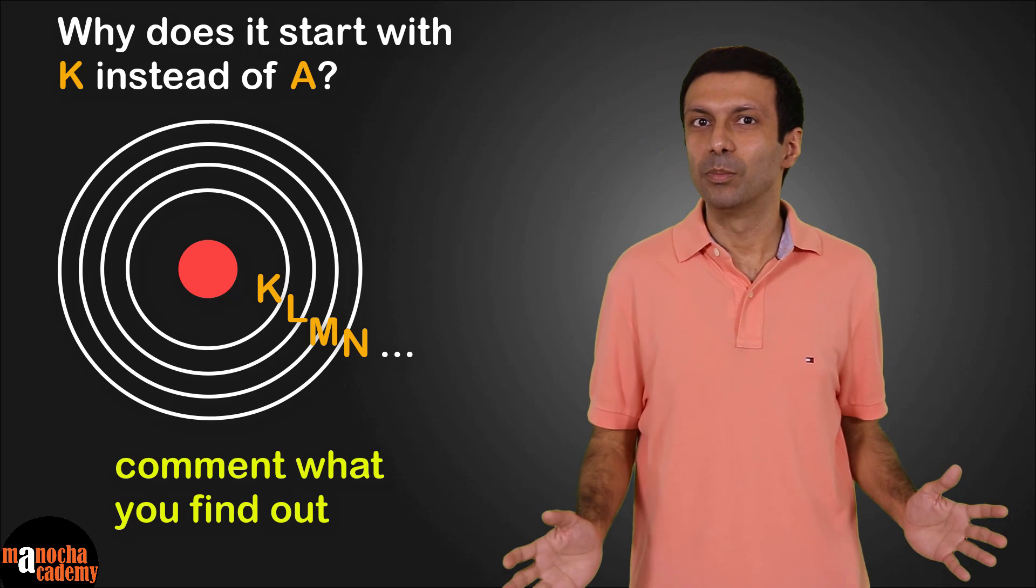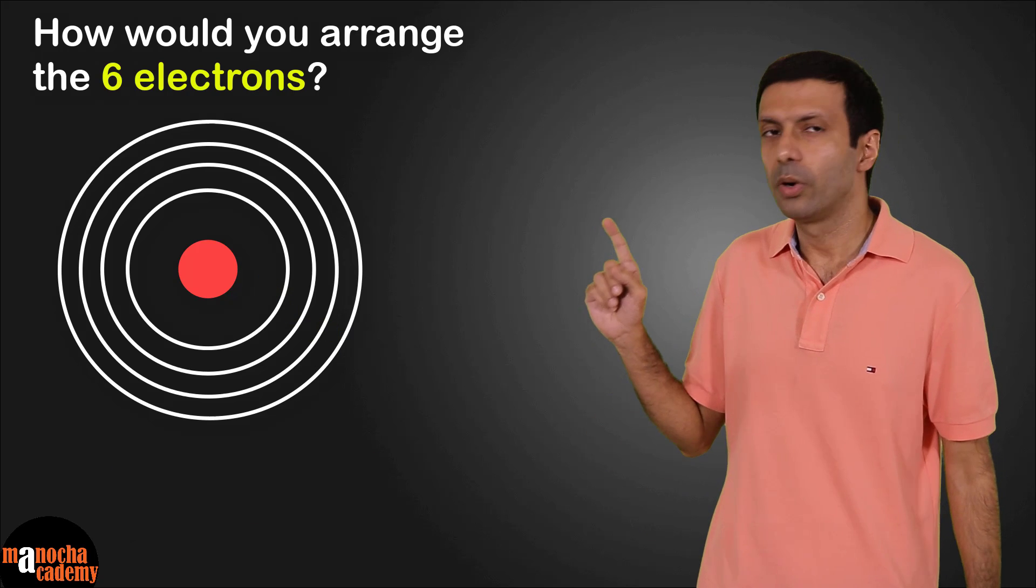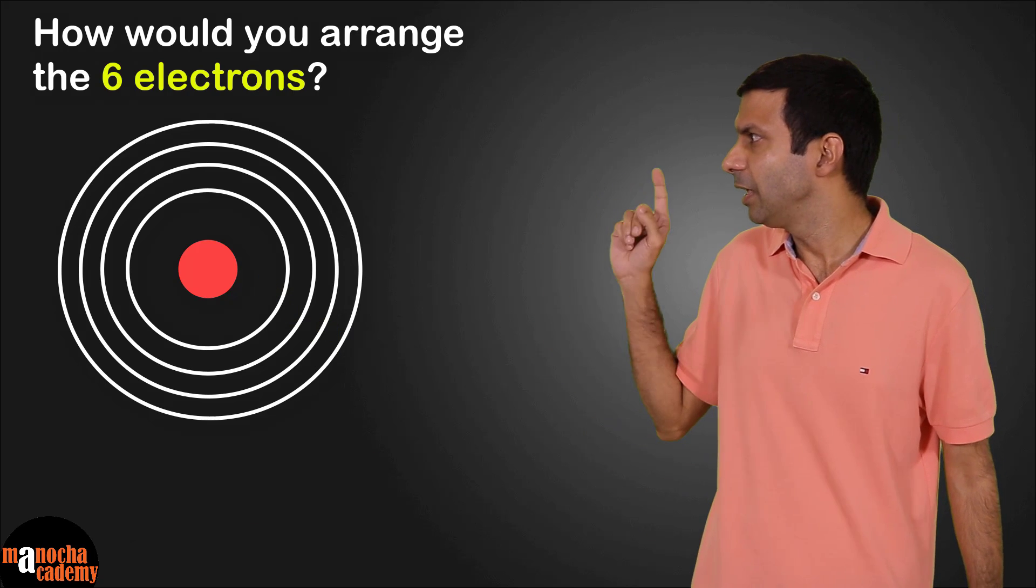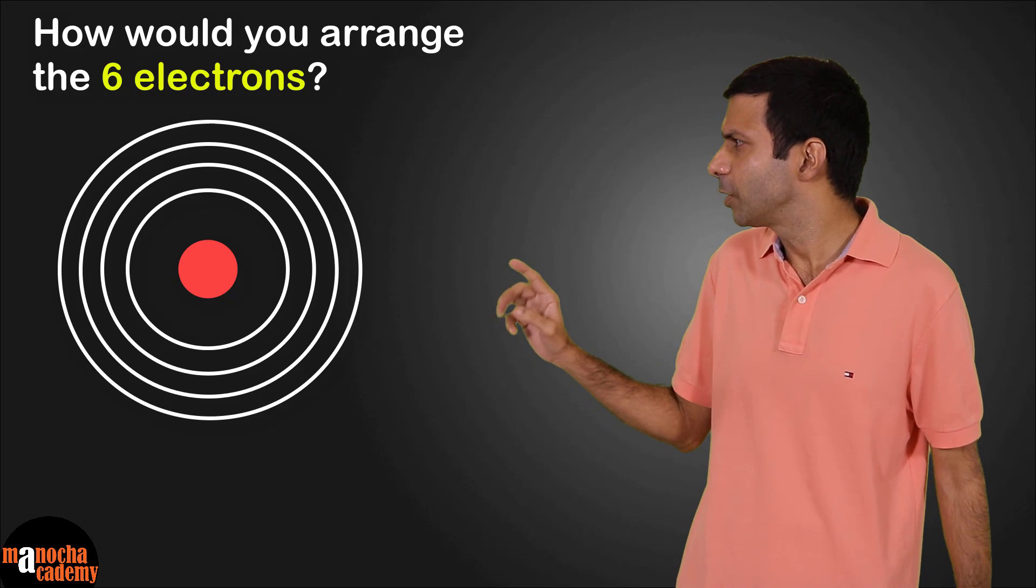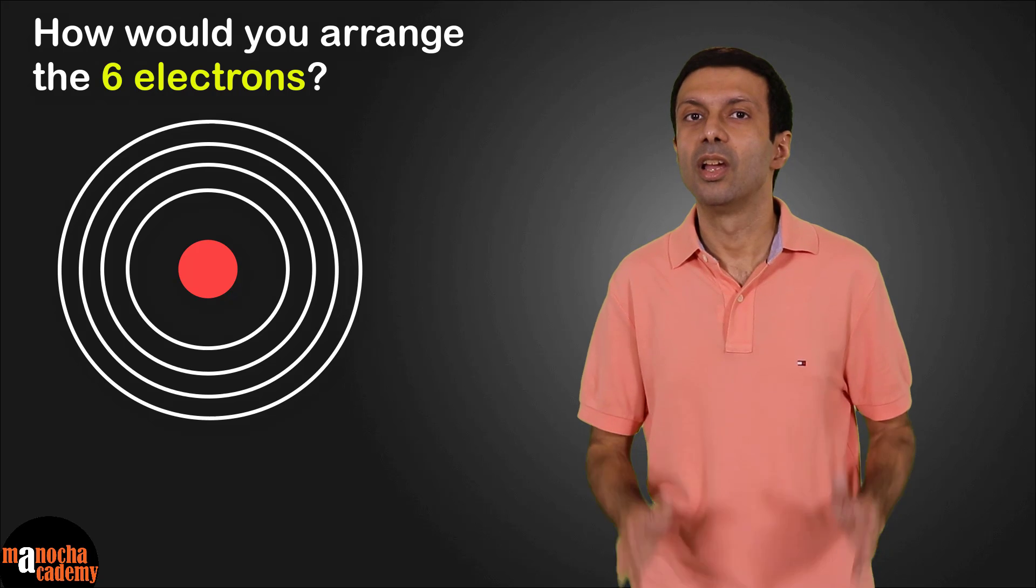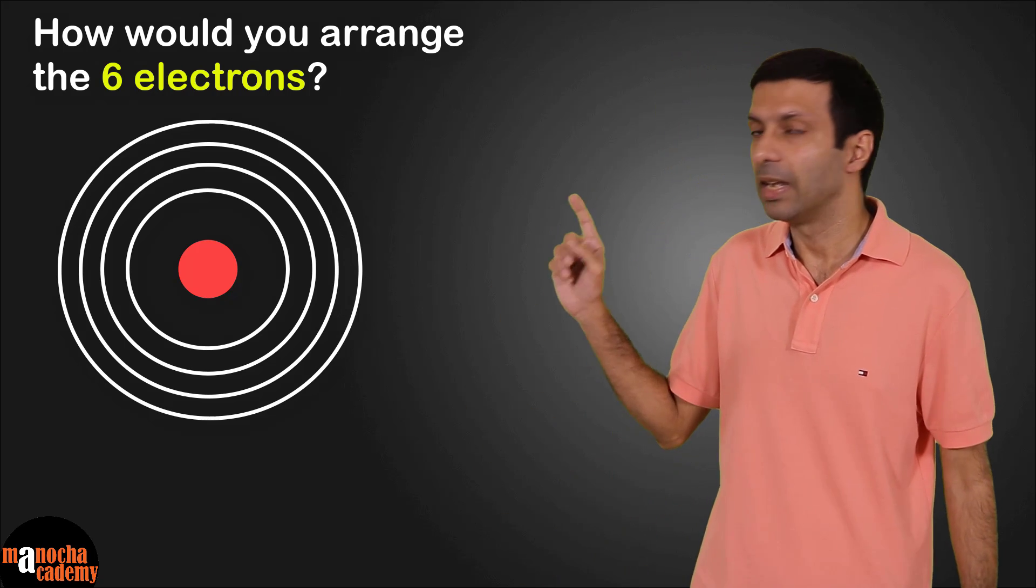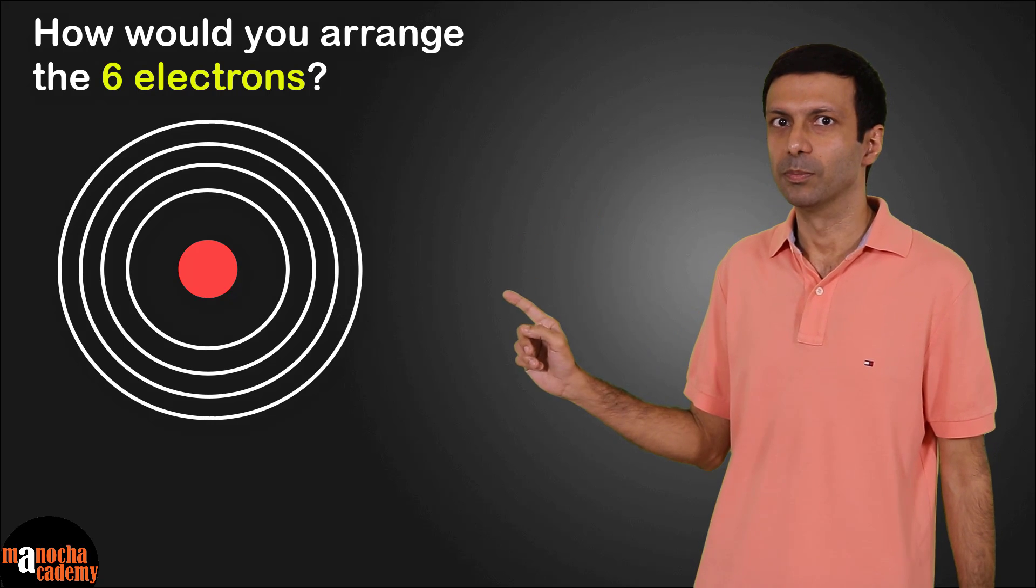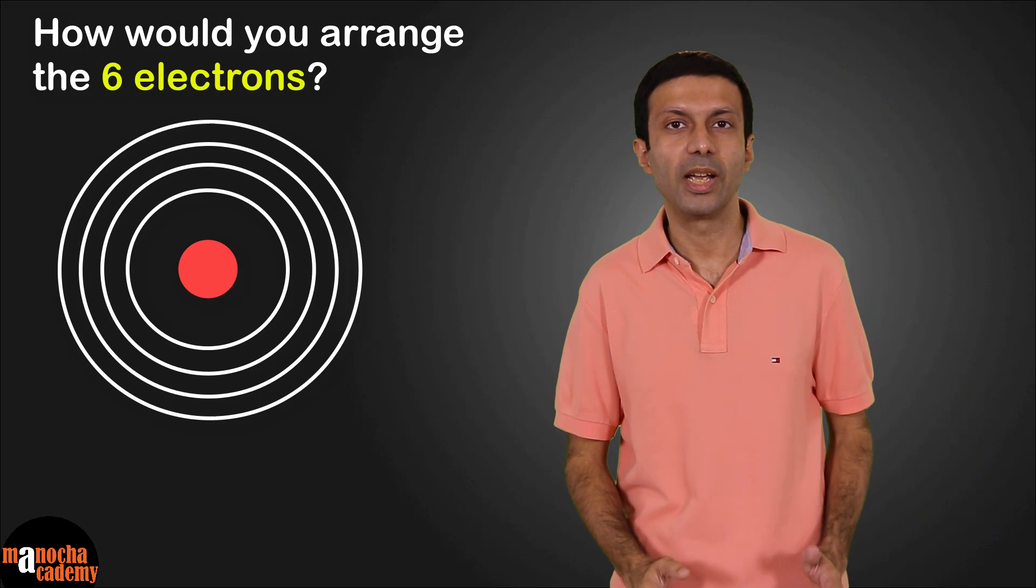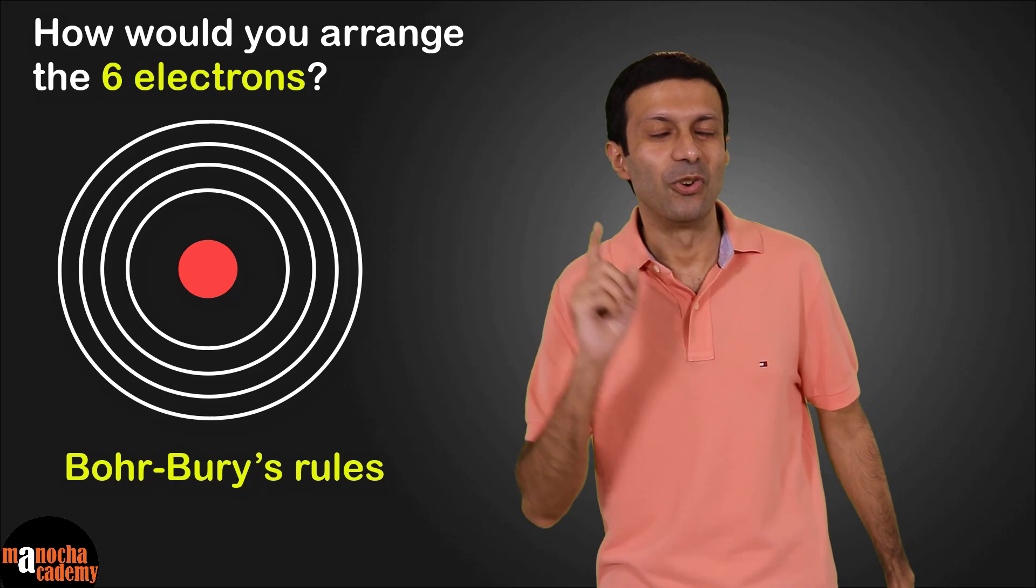Now let's say an atom has 6 electrons in it. So how would you arrange the electrons in these different shells? Can we just put them randomly in any shell? The answer is no. There are certain rules for filling in the electrons in the shells of an atom. These rules are known as Bohr-Bury's rules. So let's go ahead and take a look at these rules.